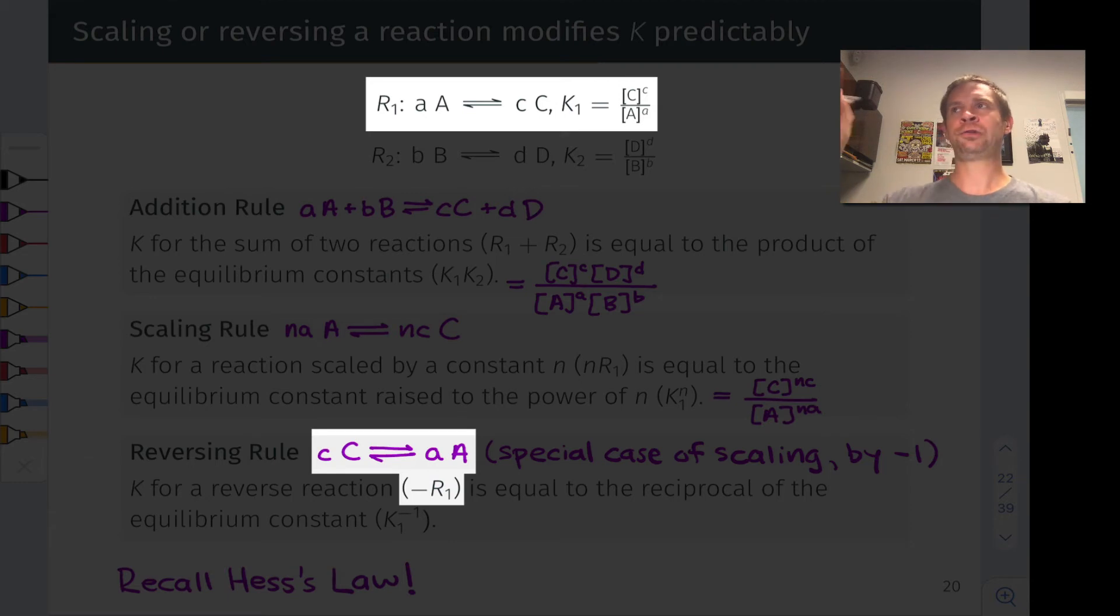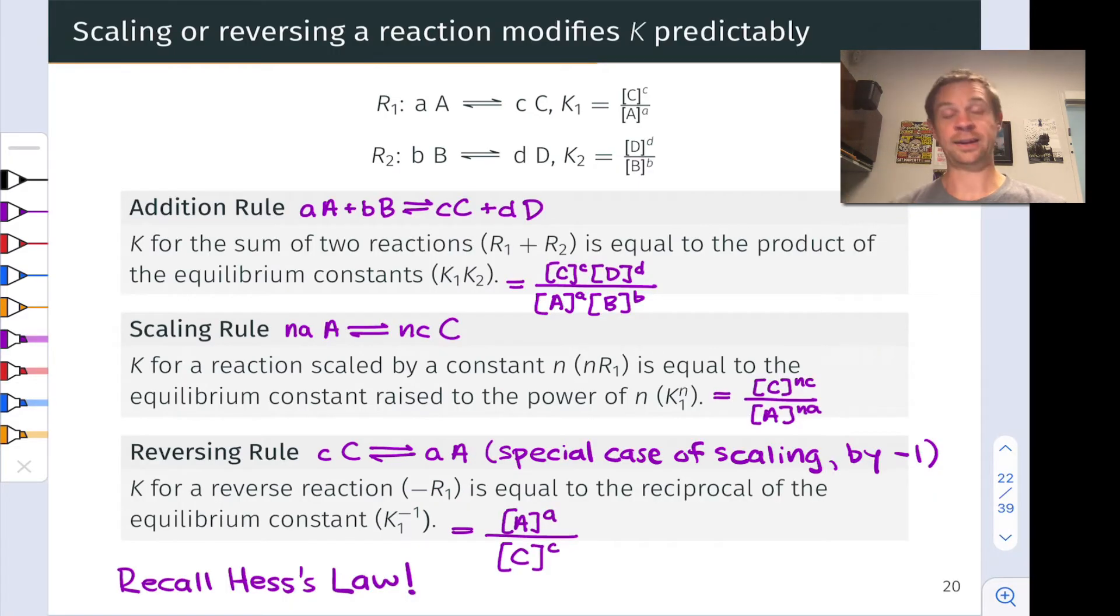So in essence, we're flipping the form of the reaction quotient and the equilibrium constant. It's like multiplying the reaction coefficients by negative one. And what ends up happening is the reaction quotient is the reciprocal of the reaction quotient for the original reaction.